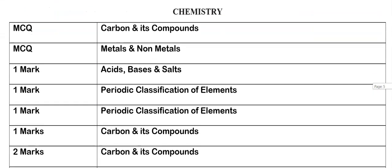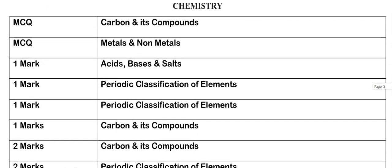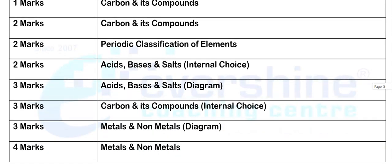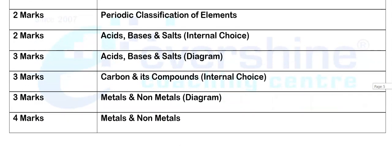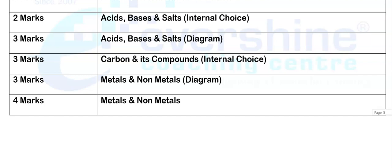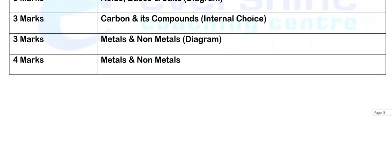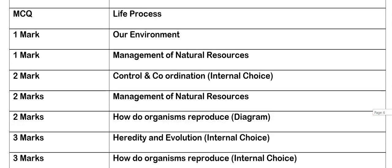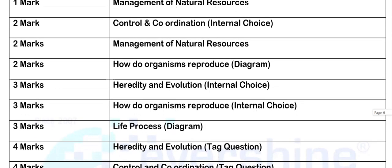Again we can see the chemistry part — from which chapter which question has been asked and for how many marks. I hope you are getting the picture. I am just giving you hints and trying to explain step by step how your final question paper could look and what the pattern of your upcoming board exam question paper might be. We can also see the biology part — from which chapter how many marks' questions are asked.